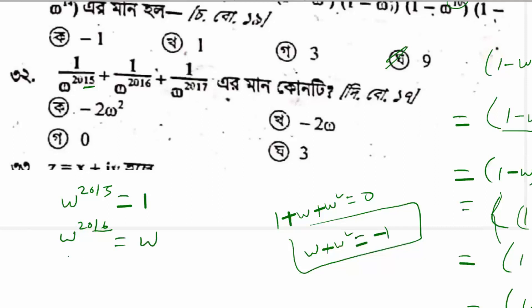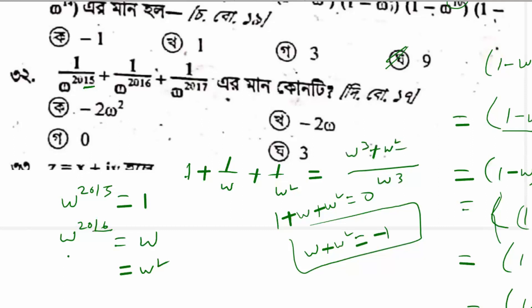Equal to omega squared. So what can we say? 1 plus 1 by omega plus 1 by omega squared. And omega cubed equals 1, so that means omega cubed plus omega squared plus omega squared — is omega cubed equal? Let's check omega cubed.